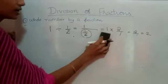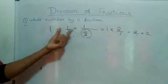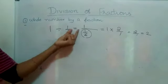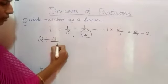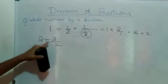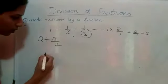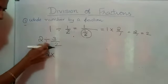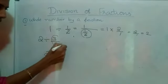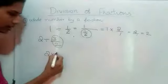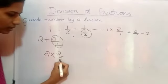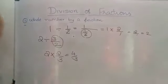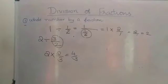So when you are asked to divide a whole number by a fraction, you have to multiply the whole number with the reciprocal of the fraction. For example, two divided by three-by-two. Two is a whole number and three-by-two is a fraction. You multiply two with the reciprocal of three-by-two, which is two-by-three. So it will become four-by-three. Whenever you get a fraction and a whole number, multiply with the reciprocal of the fraction.